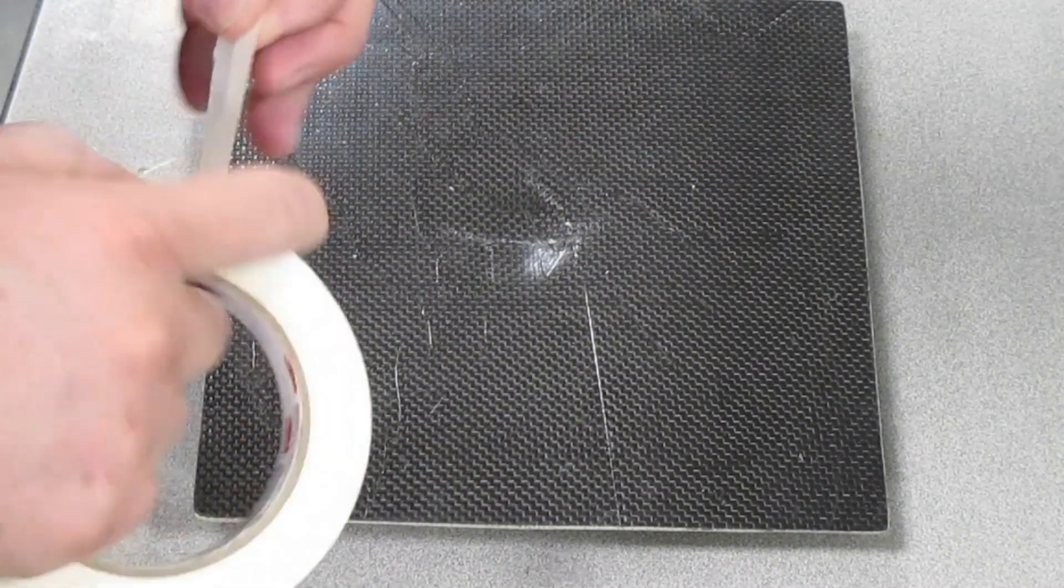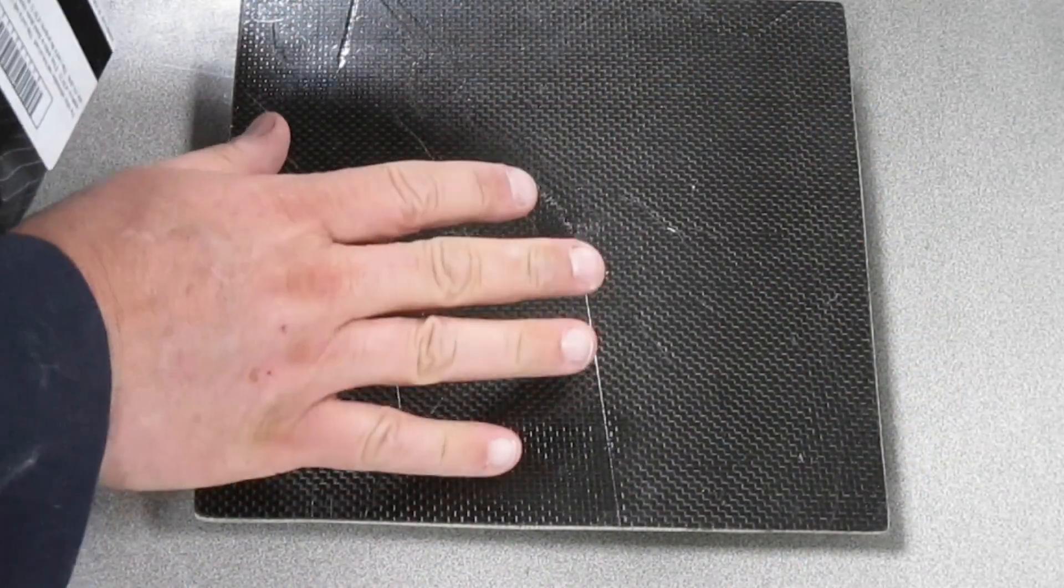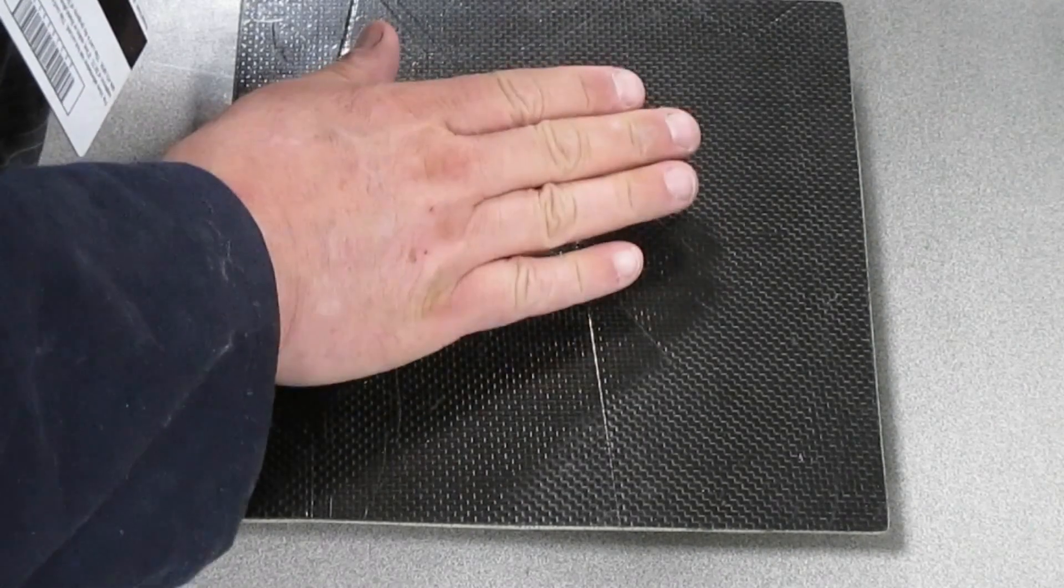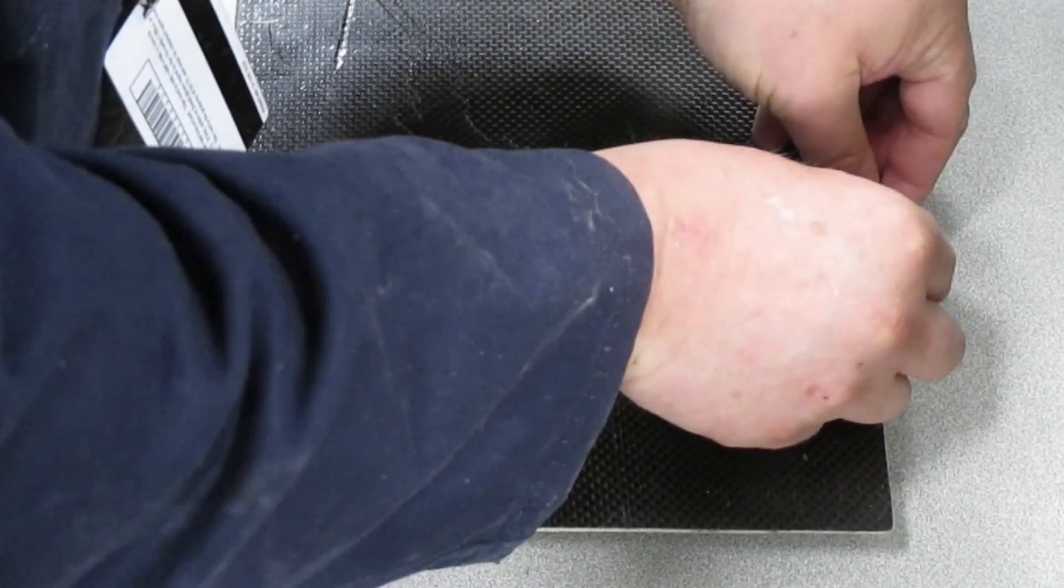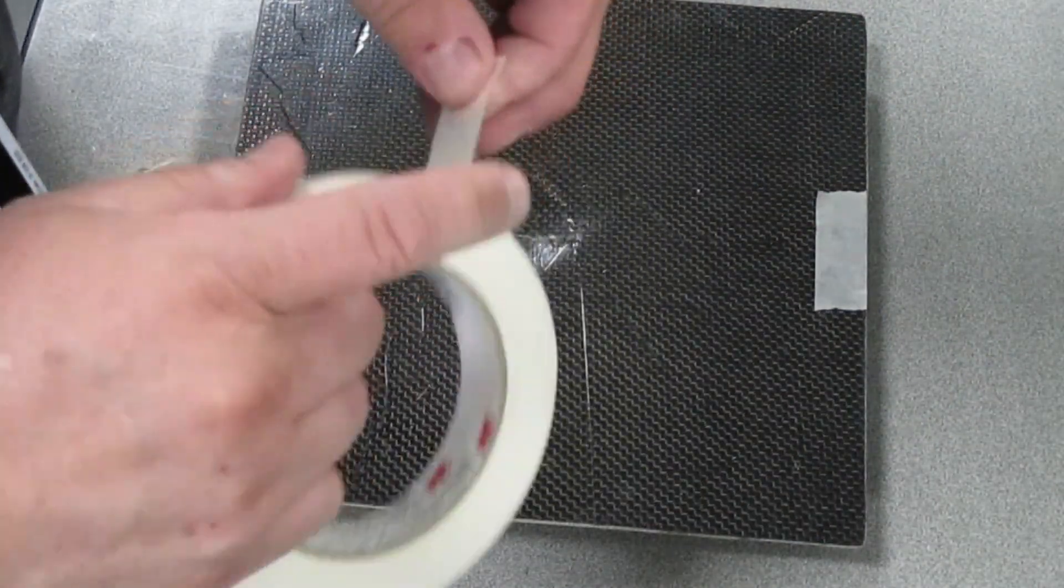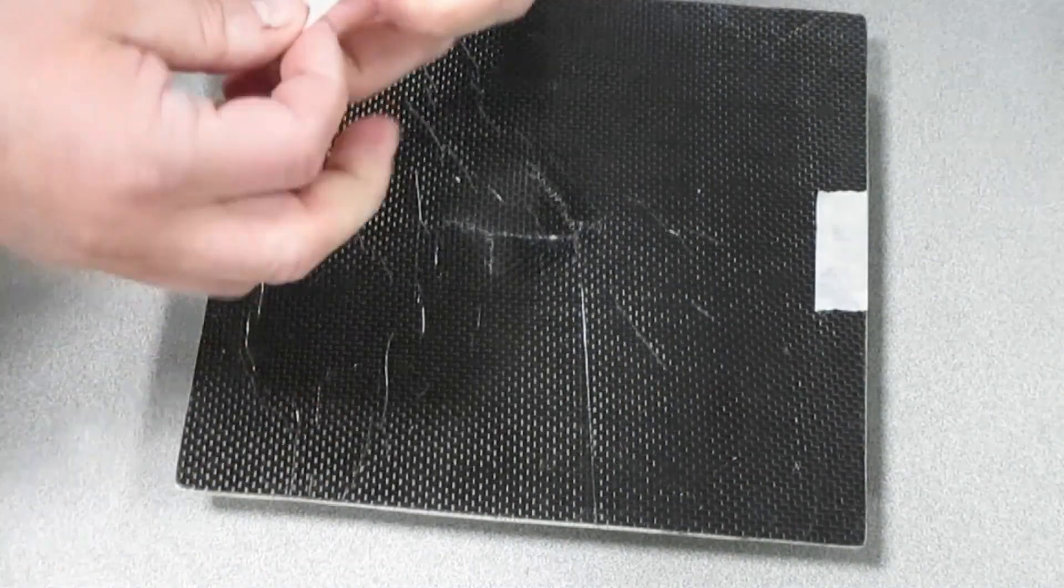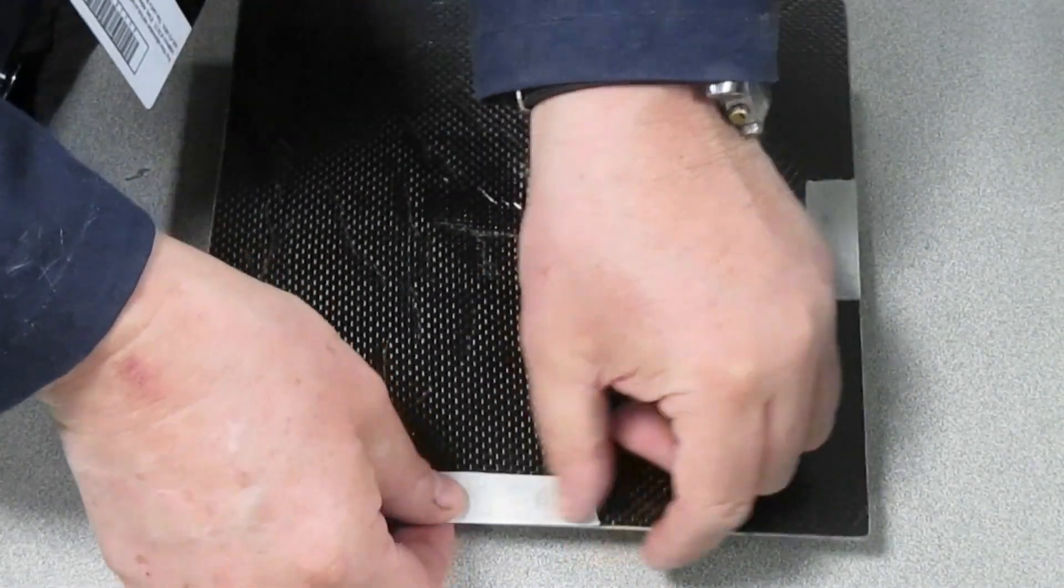We're going to get our square piece on the carbon fiber side, and put a piece of tape right along the edge about halfway along. Same thing here, I'm going to put another piece of tape about halfway along right along the edge.